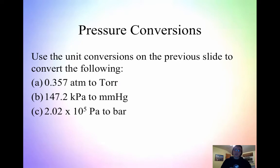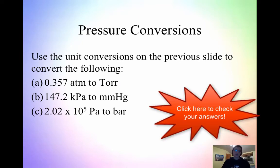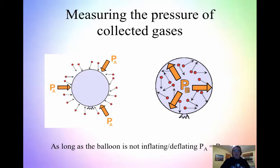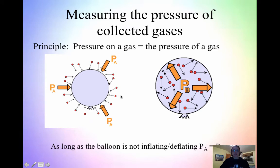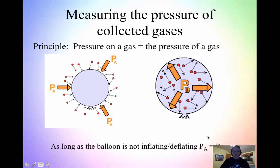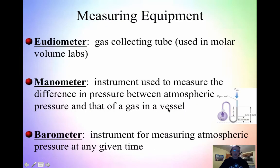Use the unit conversions on the previous slide to convert the following — pause the video, do this, then continue on. Next, we'll look at measuring the pressure of collected gases. The principle we can use is that the pressure on a gas equals the pressure of a gas. Think of it like a balloon: the atmospheric pressure on the outside equals the pressure inside the balloon because it's not inflating or deflating. As long as it's not inflating or deflating, pressure A on the outside equals pressure B.